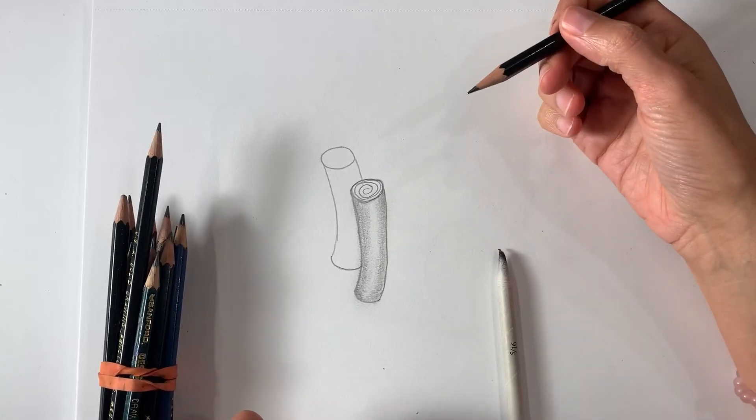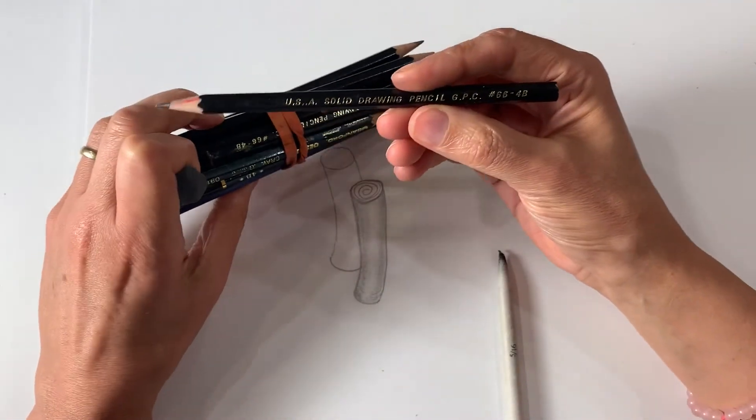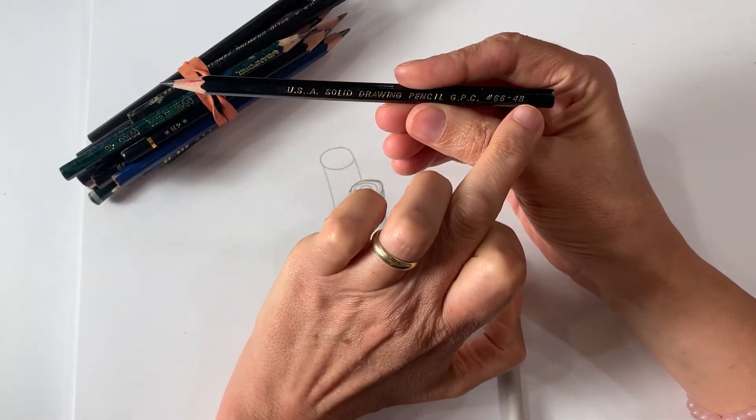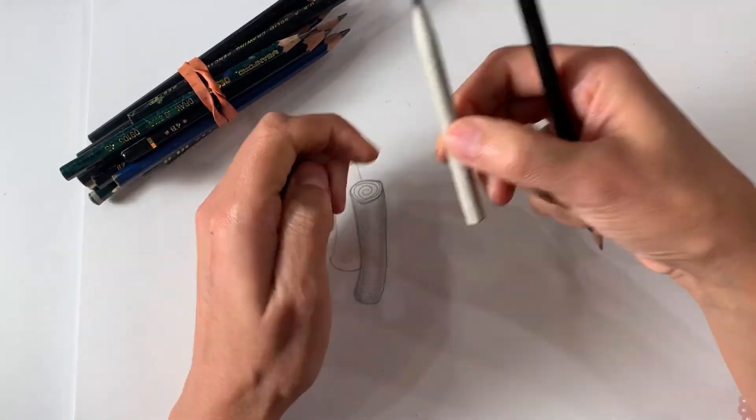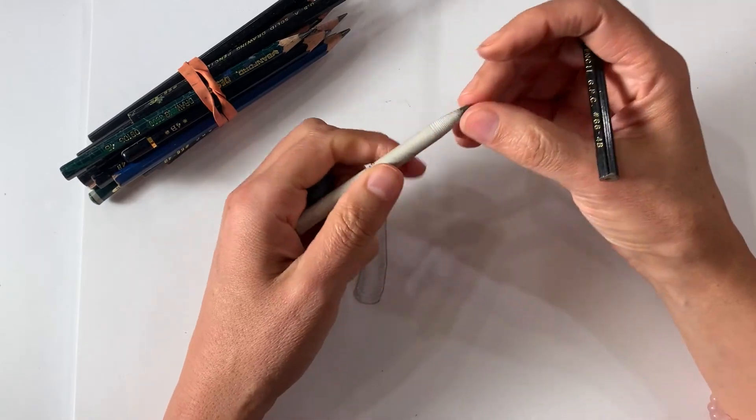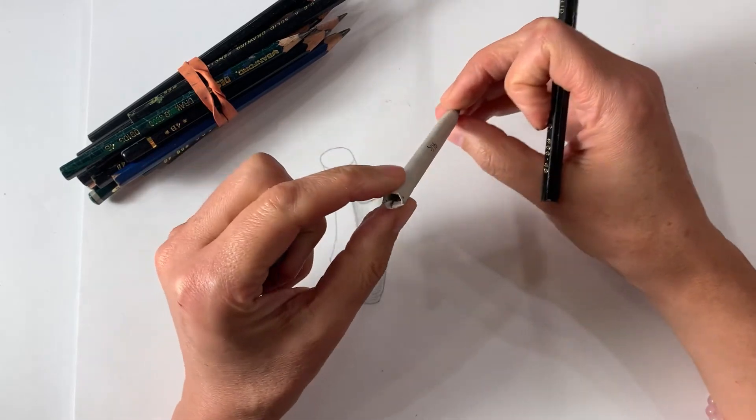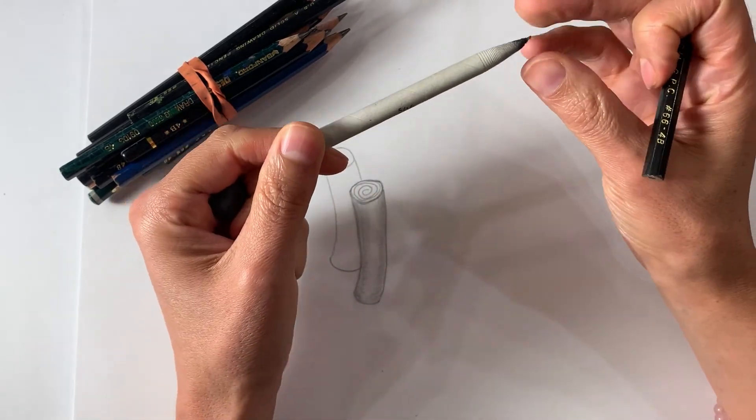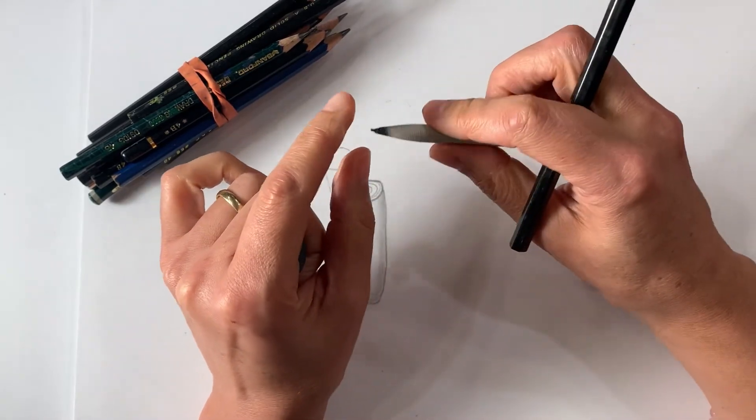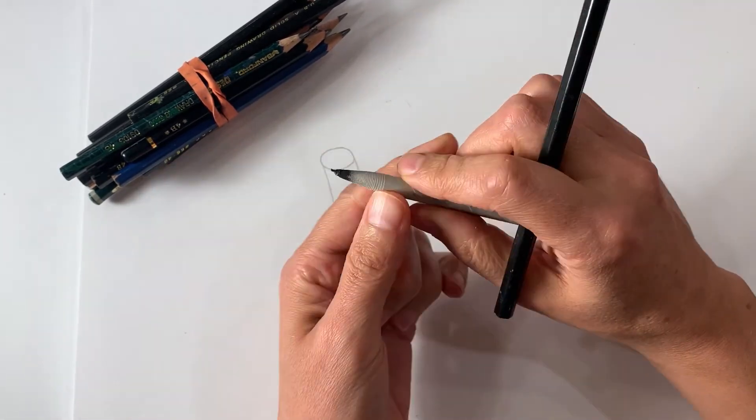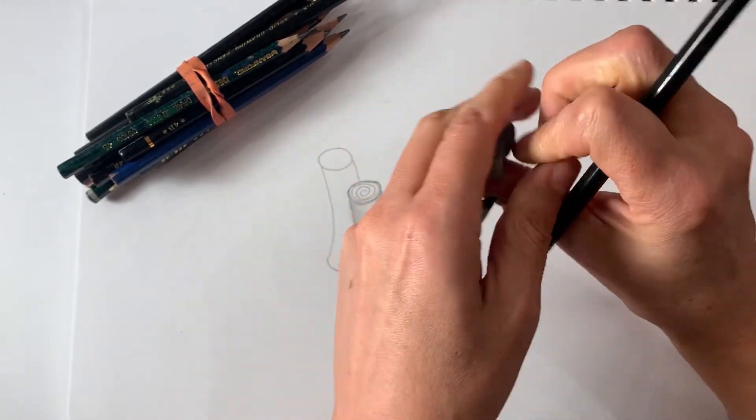Another way we can create shading is if you have drawing pencils. This is a 4B drawing pencil and I'm going to use this pencil and a blending stick. A blending stick is just rolled up paper and it helps you smudge. Instead of using your finger you're going to use this to get into all the little corners and a kneadable eraser.